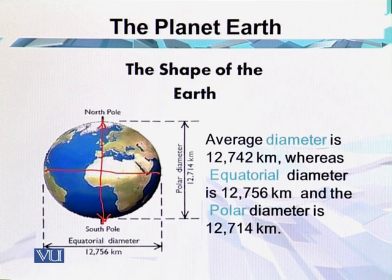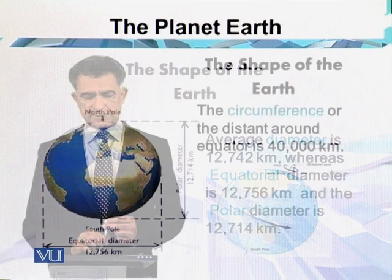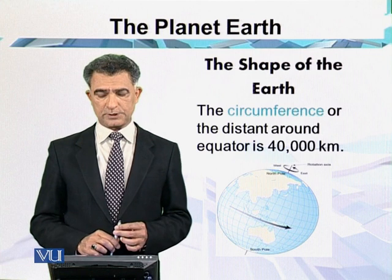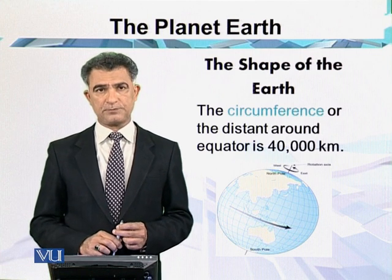Because the earth is spinning around its own axis from west to east, the circumference — the distance around the equator — is 40,000 kilometers.